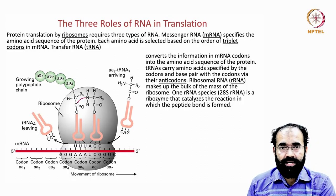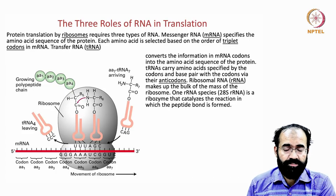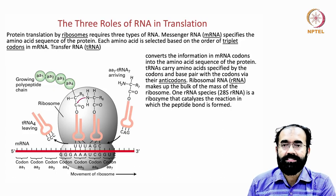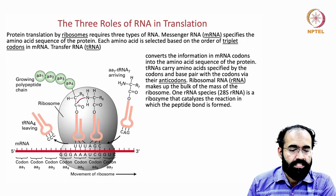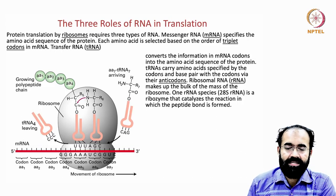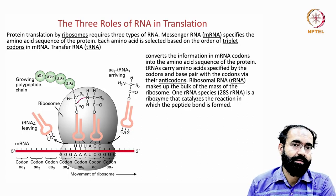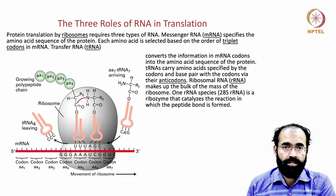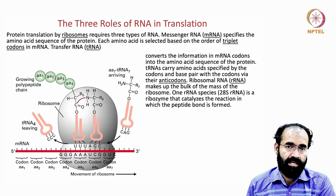The first is mRNA, or messenger RNA, which carries the message from the genome for a specific gene into the cytoplasm. The mRNA specifies the amino acid sequence of the protein to be made. Each amino acid is selected based on the order of triplet codons in the mRNA — each amino acid incorporation requires three bases, which we call a triplet codon.